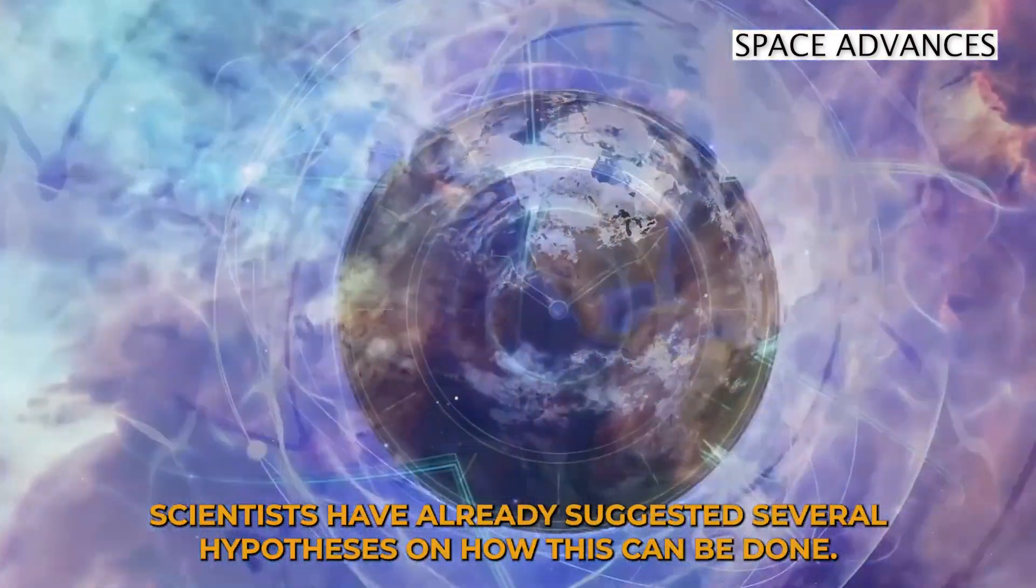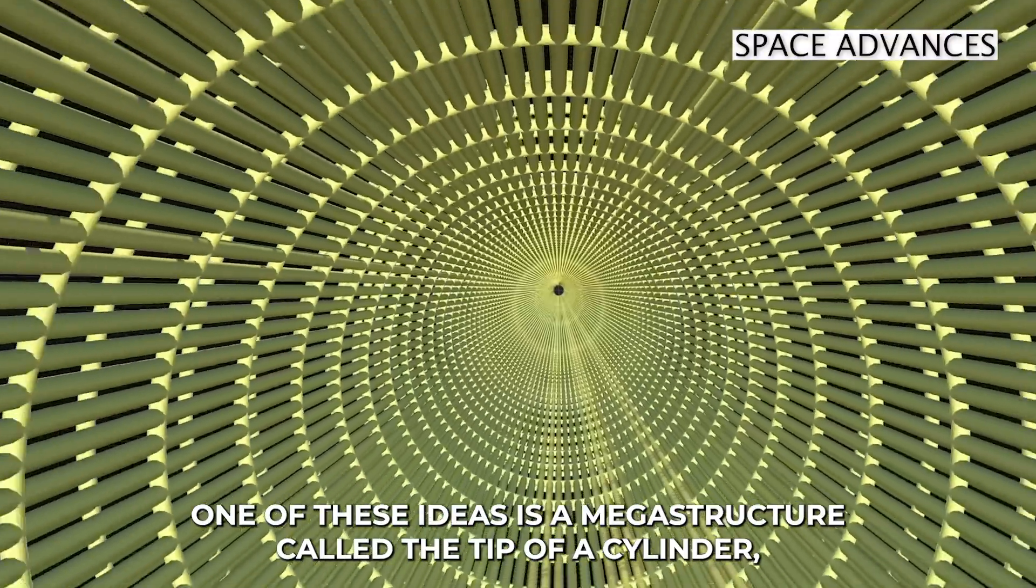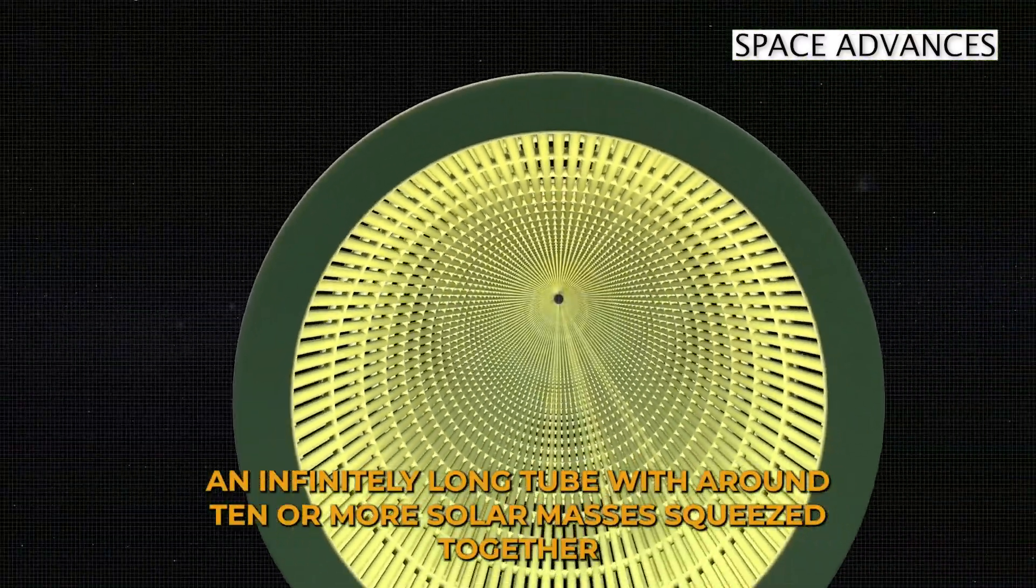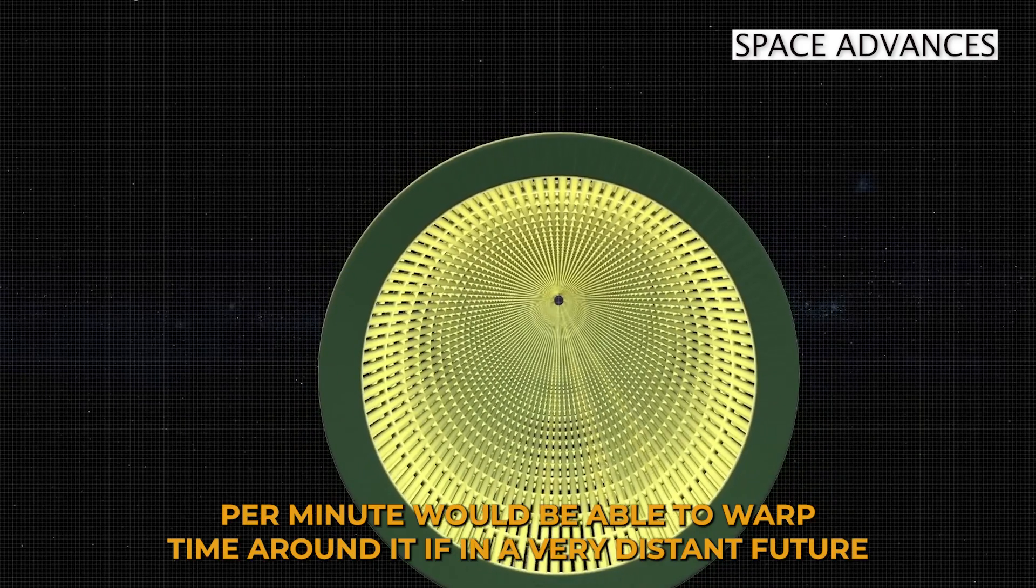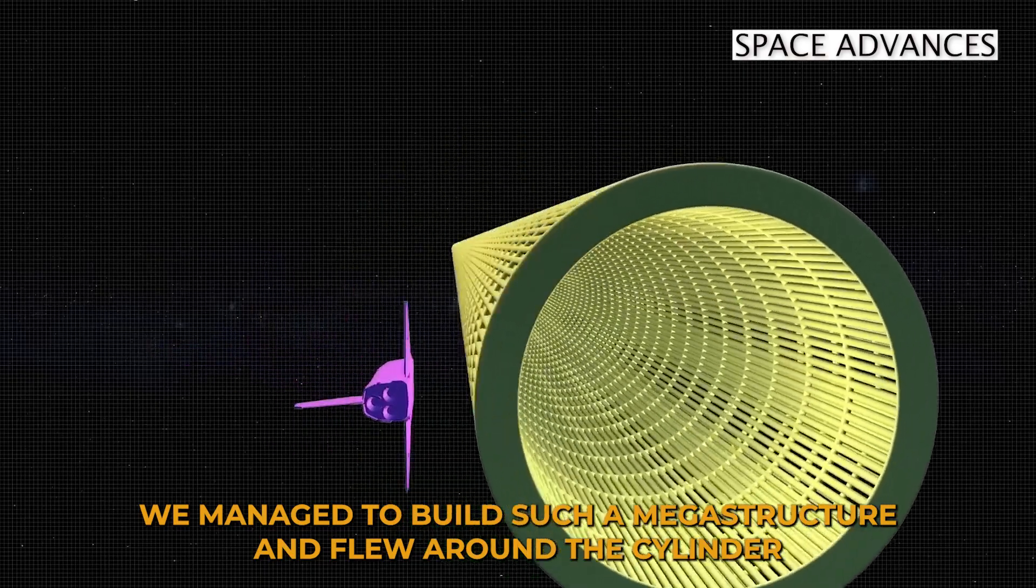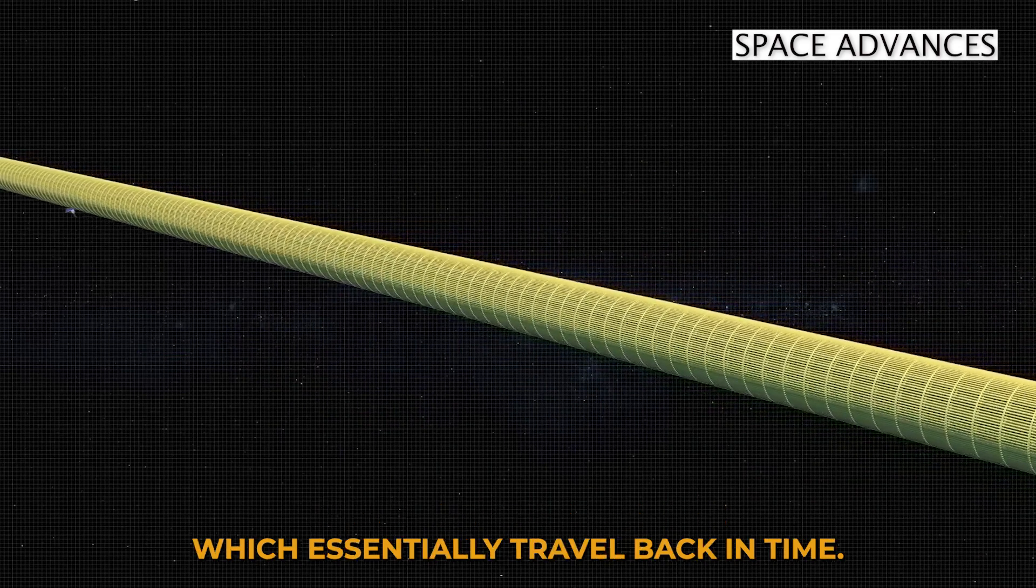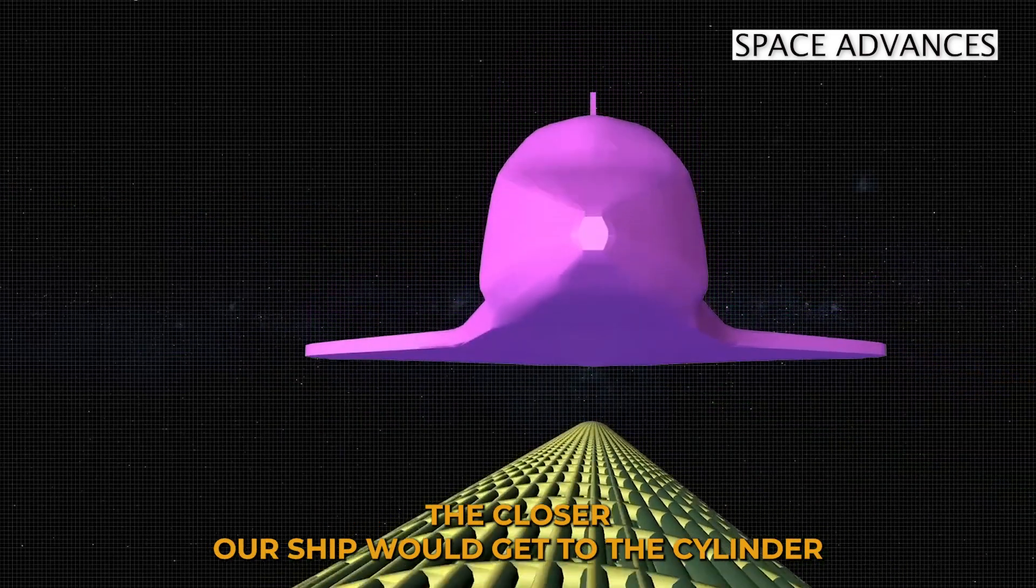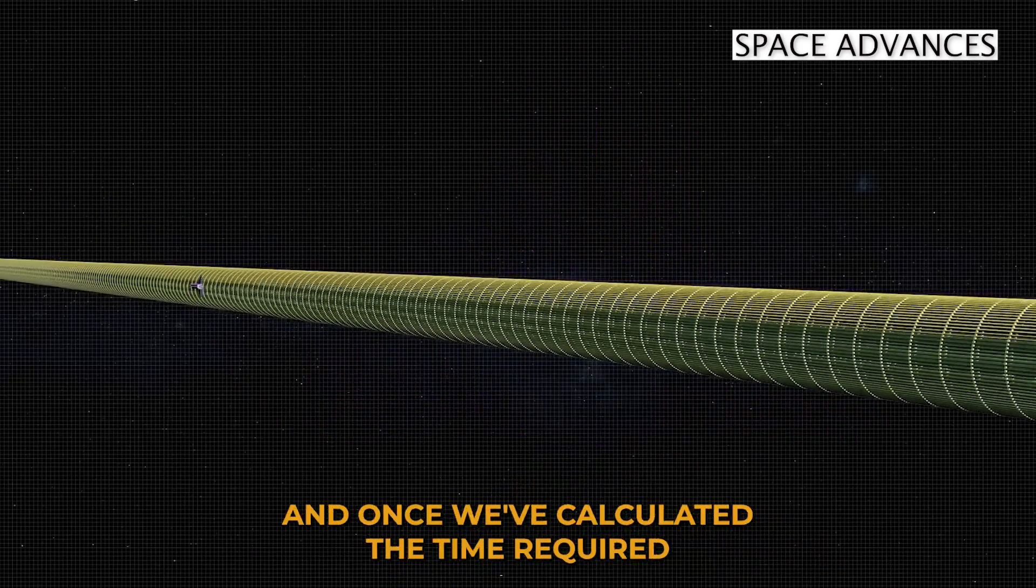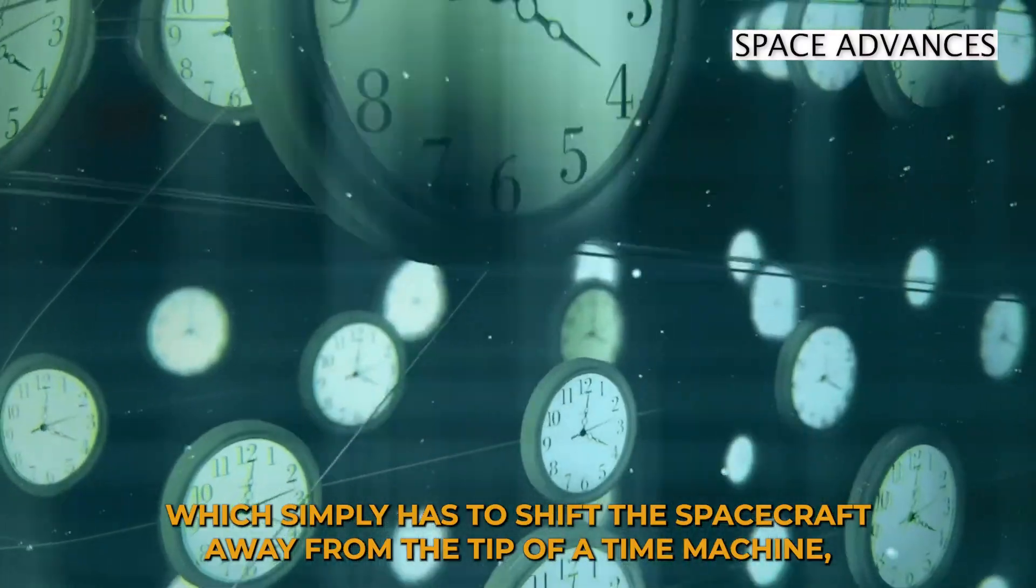Scientists have already suggested several hypotheses on how this can be done. One of these ideas is a megastructure called the Tipler Cylinder. An infinitely long tube with around 10 or more solar masses squeezed together, and spinning several billion times per minute, would be able to warp time around it. If, in a very distant future, we managed to build such a megastructure, and flew around the cylinder in a strict spiral course along the direction of its rotation, we'd essentially travel back in time. The closer our ship would get to the cylinder with a density that of a black hole, the faster into the past we'd be able to move. And, once we've calculated the time required to spend in this circular movement, we'd simply have to shift the spacecraft away from the Tipler time machine.